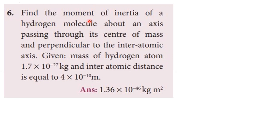Find the moment of inertia of a hydrogen molecule about an axis passing through its center of mass and perpendicular to the interatomic axis. Given: mass of hydrogen atom = 1.7 × 10⁻²⁷ kg, and interatomic distance R = 4 × 10⁻¹⁰ meter.